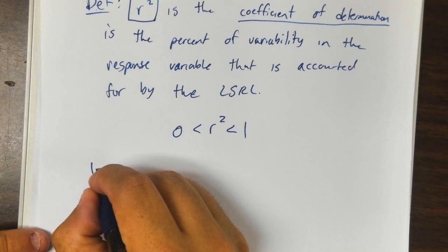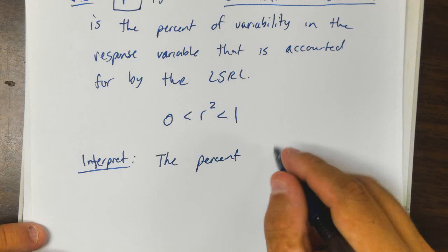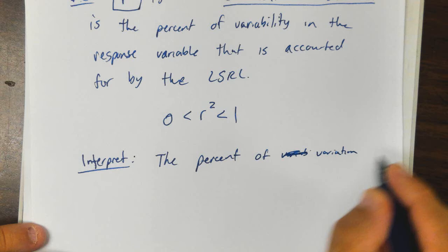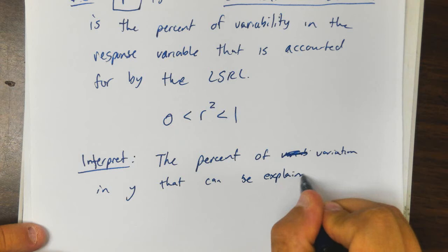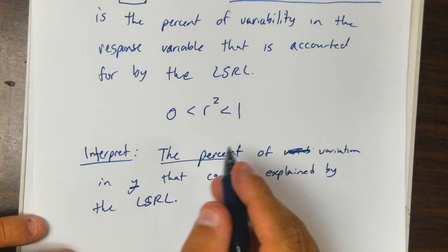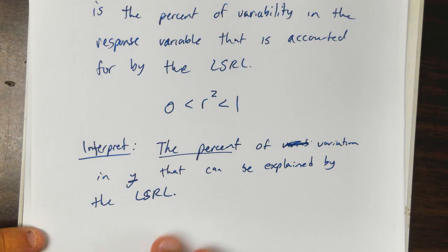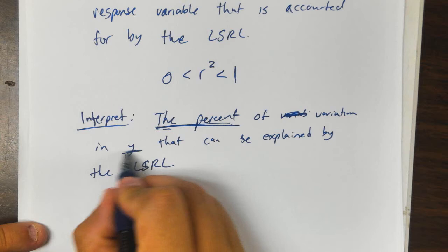So how do you interpret it? That's what you really need to know and what I'm going to be holding you accountable for. You would say the percent variation in Y that can be explained by the least squares regression line. Of course, instead of Y, you would put the actual context—what the Y value is—and instead of the percent, you'd say the actual percent. So if R was like 0.78, you'd say 78% of the variation in hair length can be explained by age, or whatever it is, by the least squares regression line.